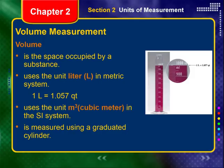Volume is a derived unit — it's the space occupied by a substance, not its mass or weight, but how much space it actually takes up. We use the liter in the metric system and the cubic meter in the SI system. In this class, we'll use the liter more regularly. One liter is equal to 1.057 quarts. We'll typically measure volume using a beaker or a graduated cylinder.